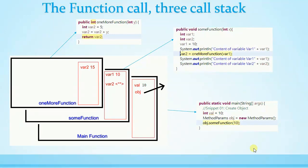One more thing: at present we are at the return-var2 statement, the last statement in oneMoreFunction. Even though all three stack frames are alive, inside oneMoreFunction we cannot access variables local to sum function or variables in main's stack frame. Only the content of the current stack frame is visible inside that function. Also, method parameters get a slot in the call stack frame — for example, oneMoreFunction gets a slot for y, and sum function gets a slot for x.